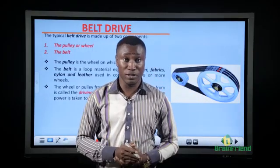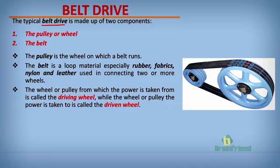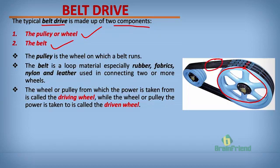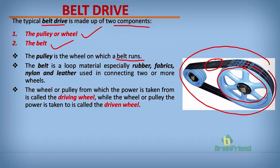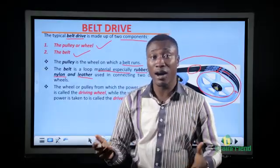Belt drive is made up of two major units: the pulley or wheel, and the belt. The pulley is the wheel on which a belt runs. The belt is a loop material — especially rubber, fabrics, nylon, and leather — used in connecting two or more pulleys or wheels. Your belt can be made of fabrics, rubber, and nylon.